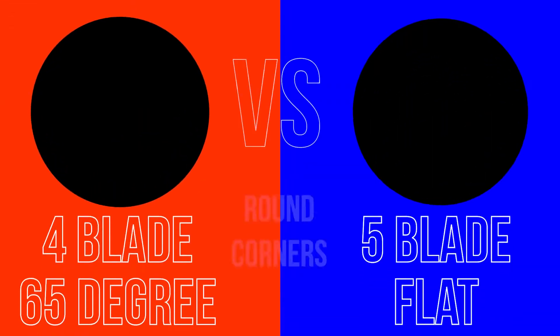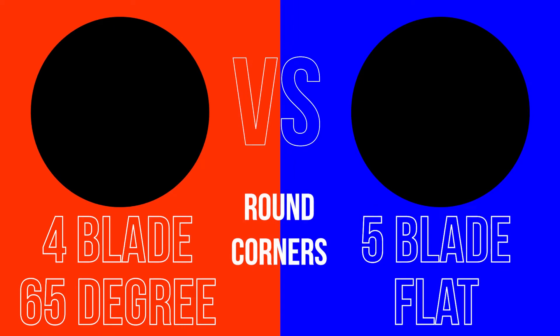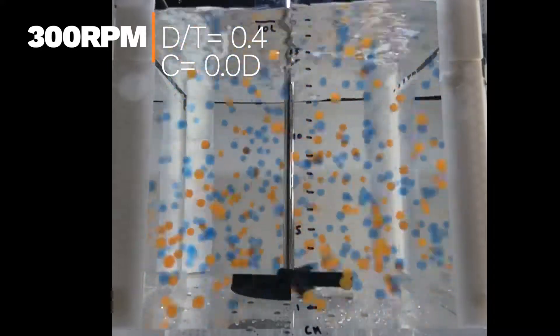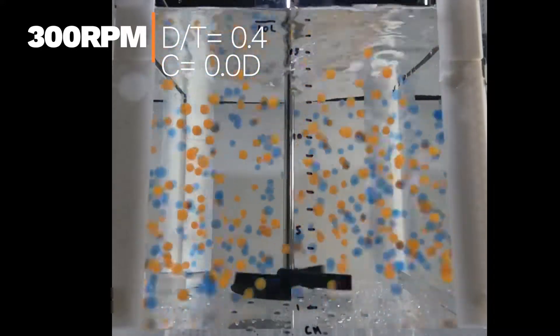How does a 4 blade 65 degree agitator designed for a square tank with round corners perform? Even at the high speeds recommended by the manufacturer, turbulence at the interface is moderate.